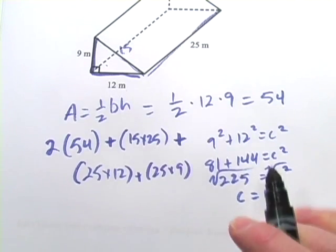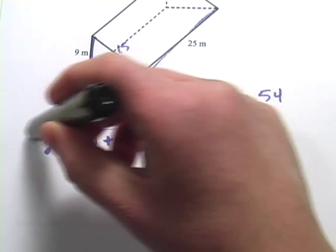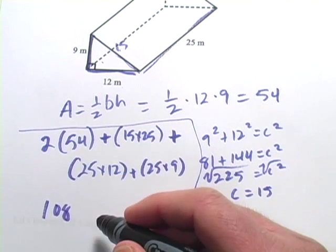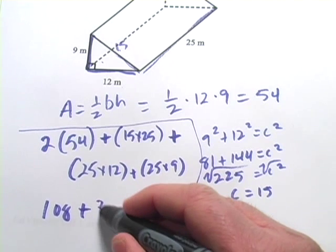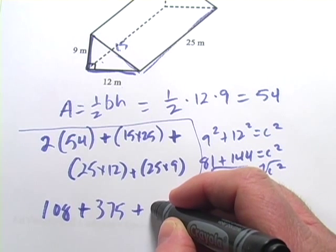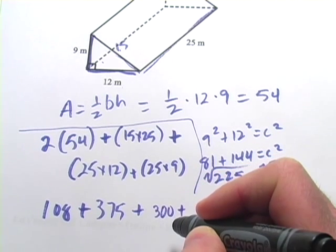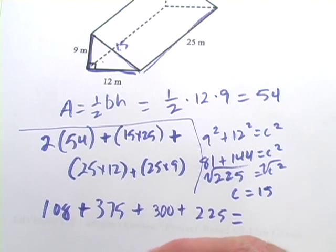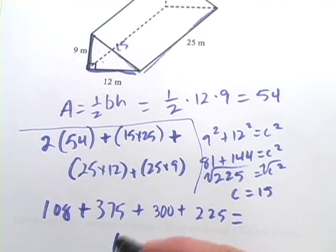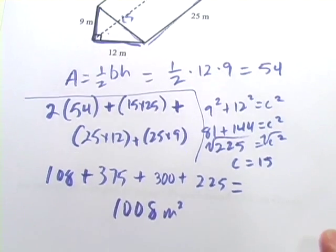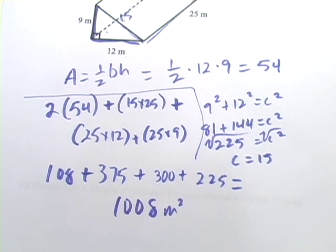Now we just have to do a little bit of calculating and add up all of this stuff. So 54 times 2 is 108, 15 times 25 is 375, 25 times 12 is 300, and 25 times 9 is 225. Add all that together, we get 1008, and this is meters squared. So that's the surface area of a triangular prism.